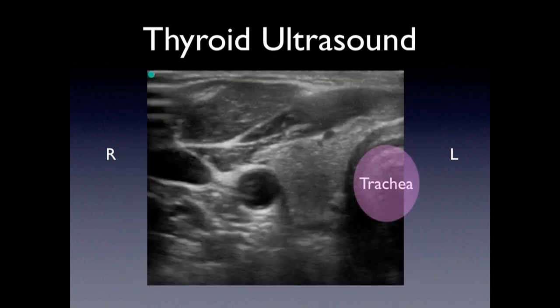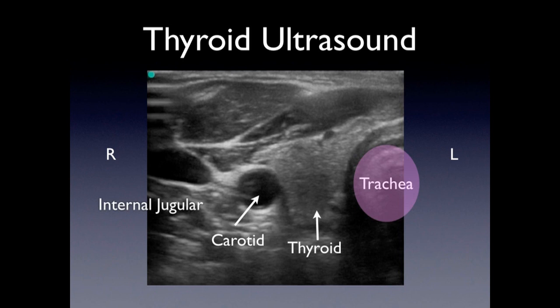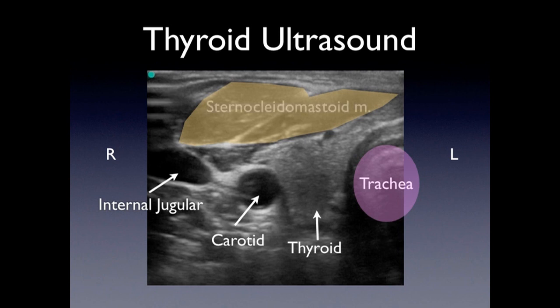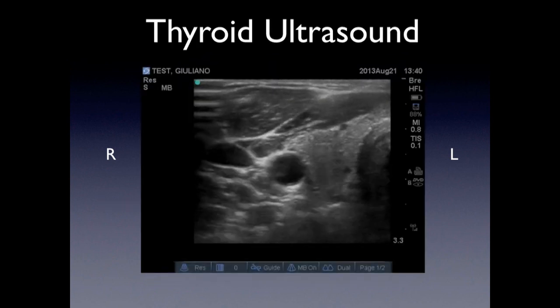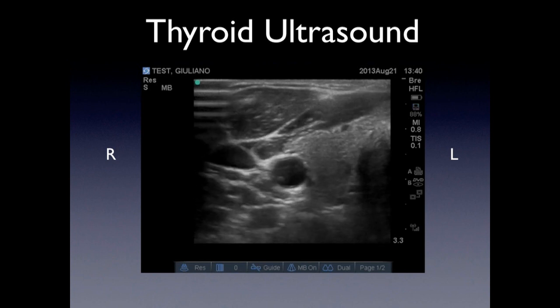Now let's move the probe laterally so we can see all the structures. In one image we should be able to visualize the trachea at the midline, and as we move laterally you'll see the right lobe of the thyroid along with the common carotid, then the internal jugular. In the most lateral and anterior portion of your image you're going to see the sternocleidomastoid muscle. Here's the moving image of the ultrasound — you can see the pulsations of the common carotid.